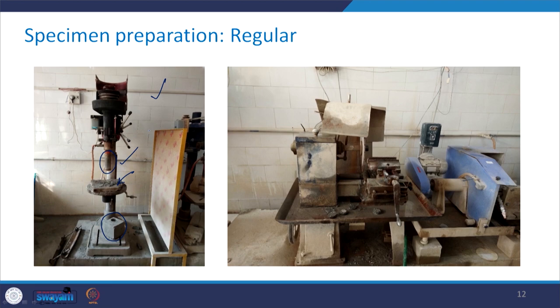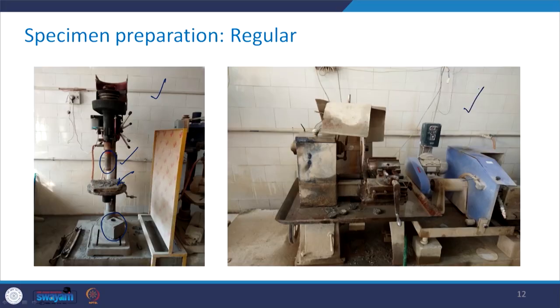The length-to-diameter ratio is a range for each test type. When extracting a specimen, we may not get the exact required length, so we take it out a little bit longer and then use a cutting machine to trim the specimen. The cutting machine has a blade: the specimen is fixed and the blade cuts it to give a specific required length. Using the extraction machine and the cutting machine, we can obtain a cylindrical specimen of the required dimensions in the lab.